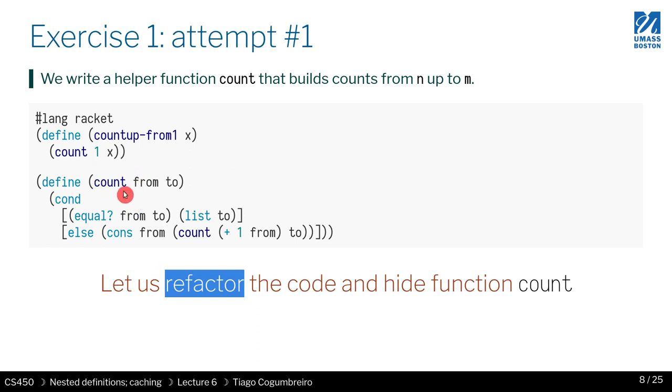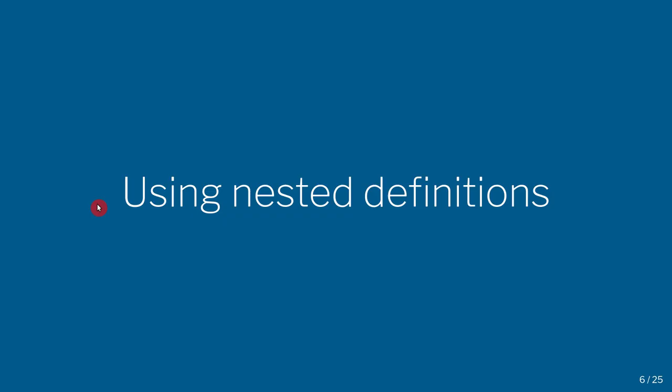In this case, by making count a private function in quotation marks, under quotes. So how do we hide count? Well, there's one very easy way. As we saw before, the body of a function is terms.